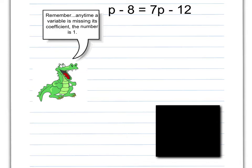Here's another one to go through. Just a reminder — Allie tells us: remember if it's just a P, you can put a 1 in front of it, because P is like 1P — that's the coefficient. So just like the last one, I want to get rid of the smaller variable. 1P is the smaller one. So if I have a positive 1P, I'm going to subtract 1P from both sides, because then I'll bring the P's onto the same side.